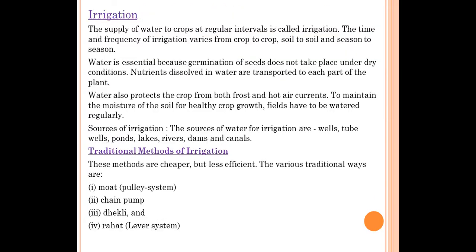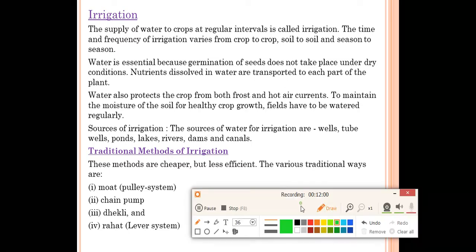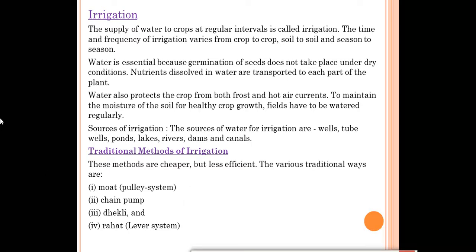The next important topic is irrigation. Irrigation means providing water to the crops. The supply of water to crops at regular intervals is called irrigation. The time and frequency of irrigation varies from crop to crop — for example, rice/paddy needs a lot of water, while wheat needs less. It also varies by season: crops grown in summer need more water, while those grown in winter need less.